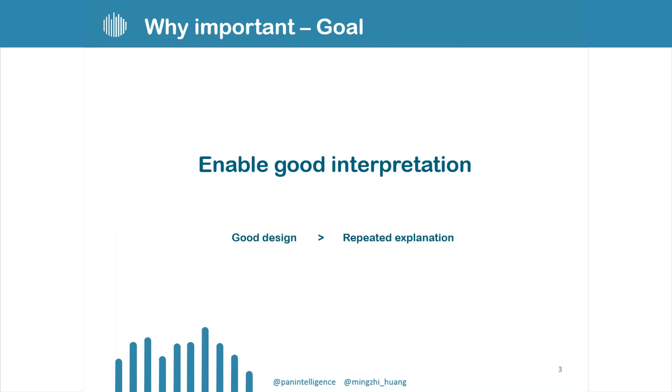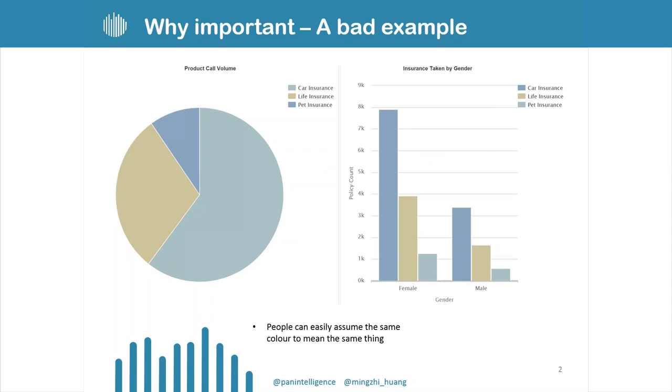The goal is to enable good interpretation for people when they look at dashboards or charts. If we can do a design really well, then we don't need to repeatedly explain the information to other people. For example, we don't need to keep explaining what blue means to different people because that's actually quite confusing.